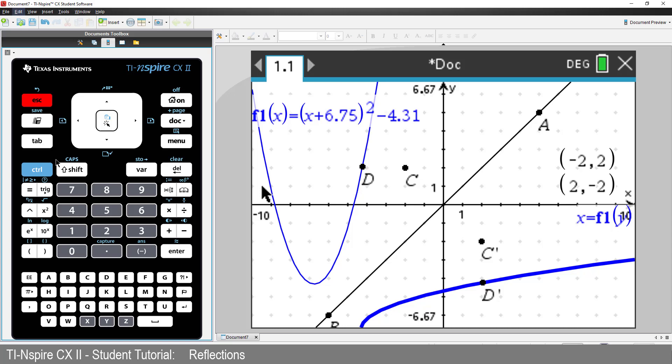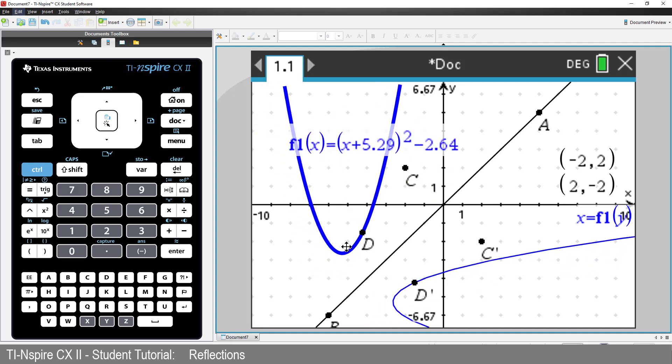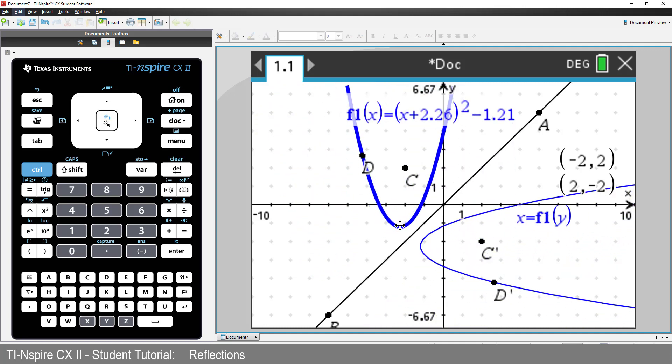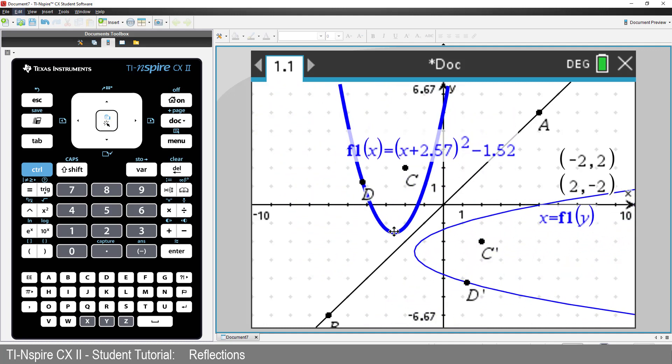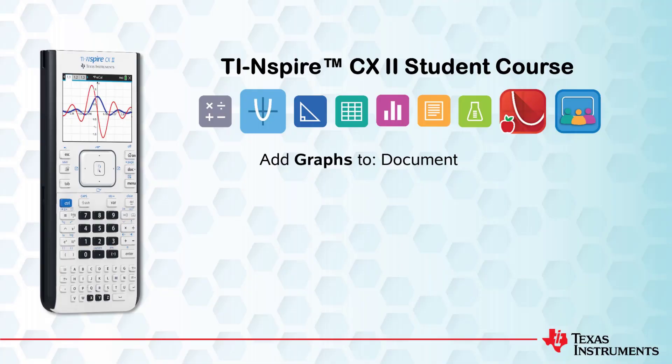Let's grab the original graph. Notice how the reflected graph moves accordingly. If you want an additional challenge, see if you can reflect a function in the line y equals three or x equals two. That's all for this session. Be sure to check out the other lessons in this series. Thanks for watching.